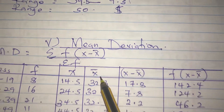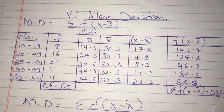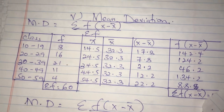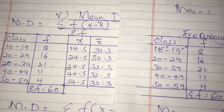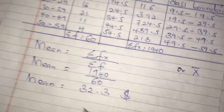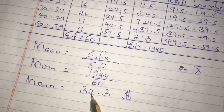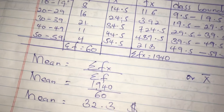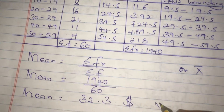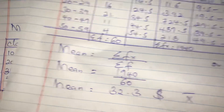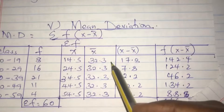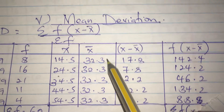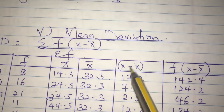x̄ means the mean. In a previous video we had calculated the mean, and it was 32.3 — so 32.3 is our x̄. We place this value throughout the entire x̄ column.